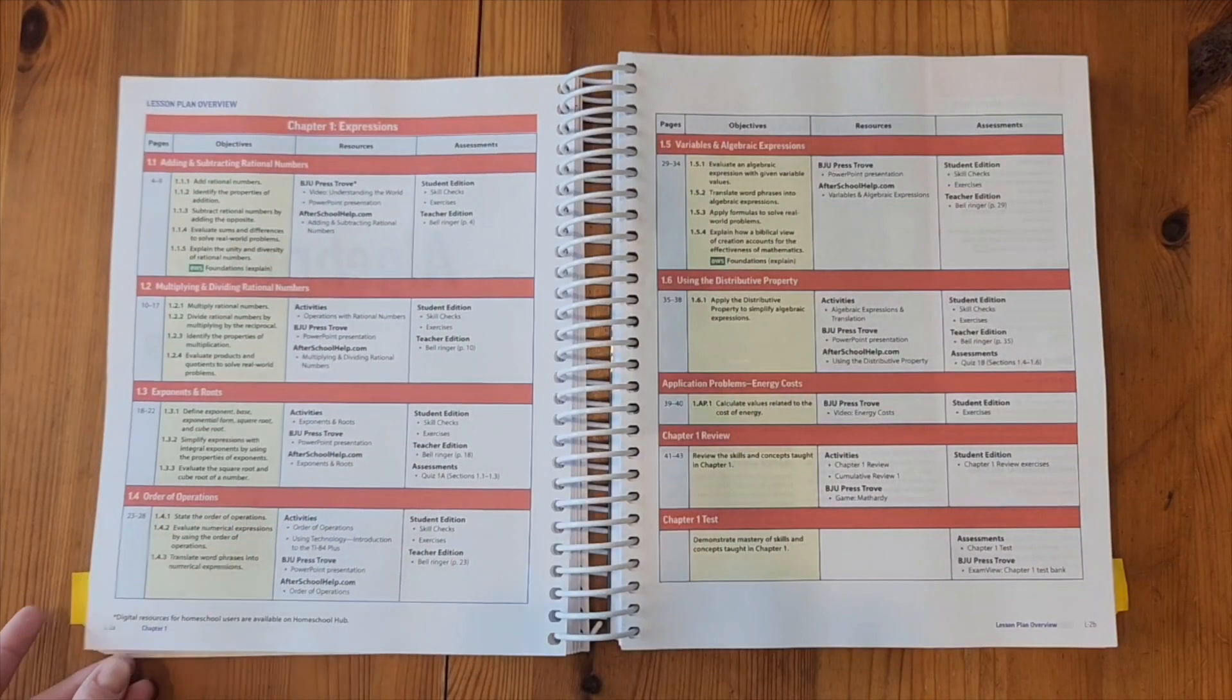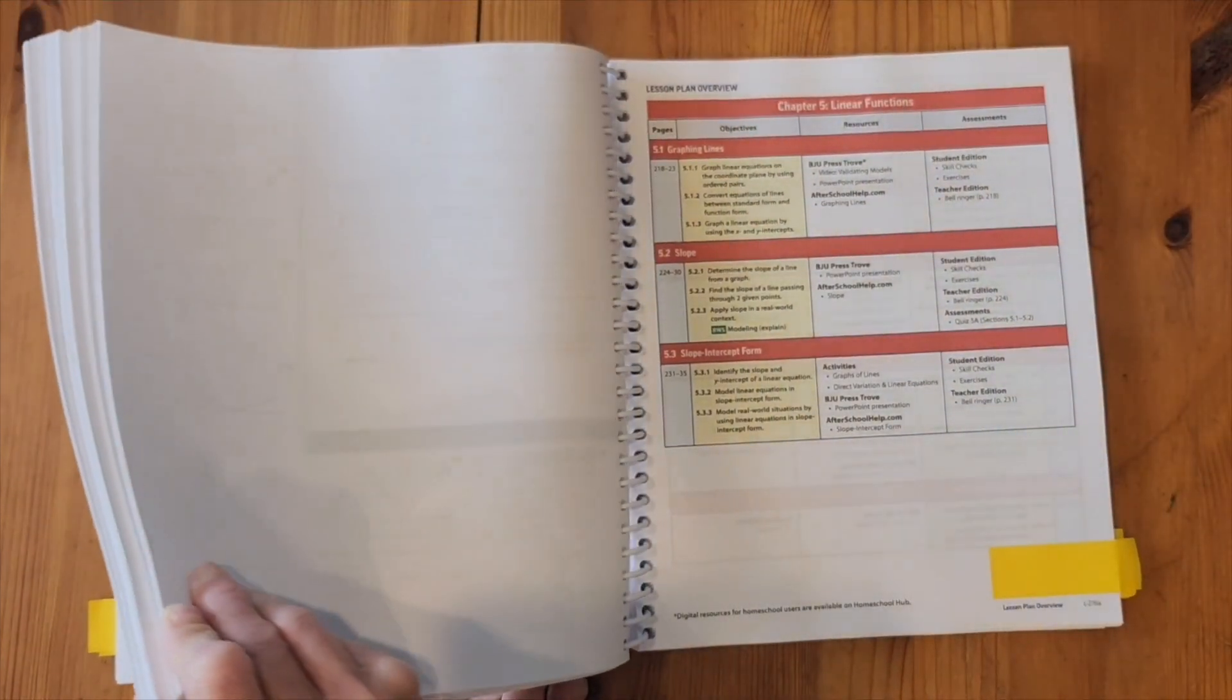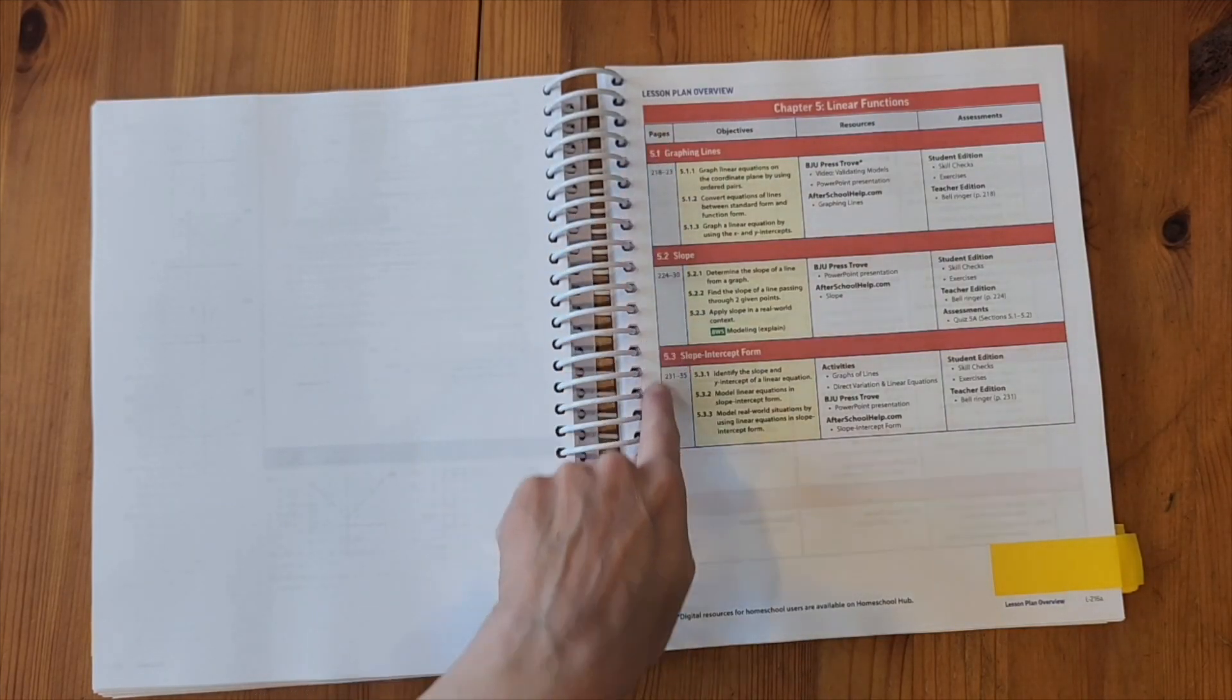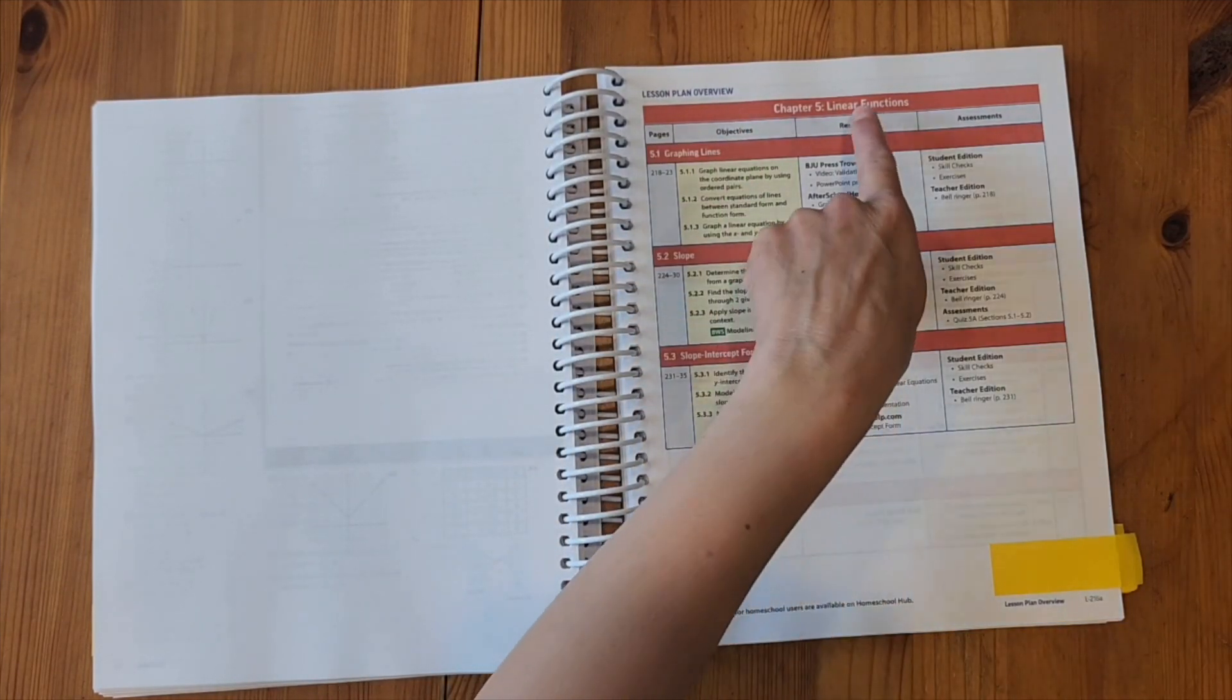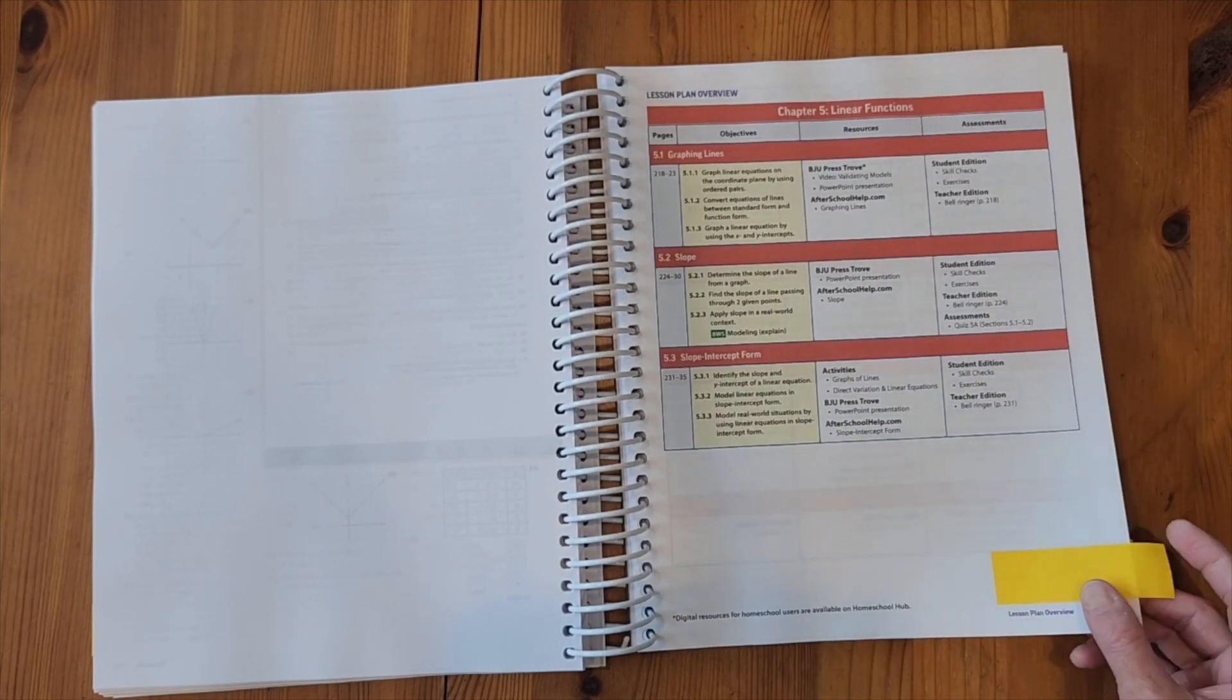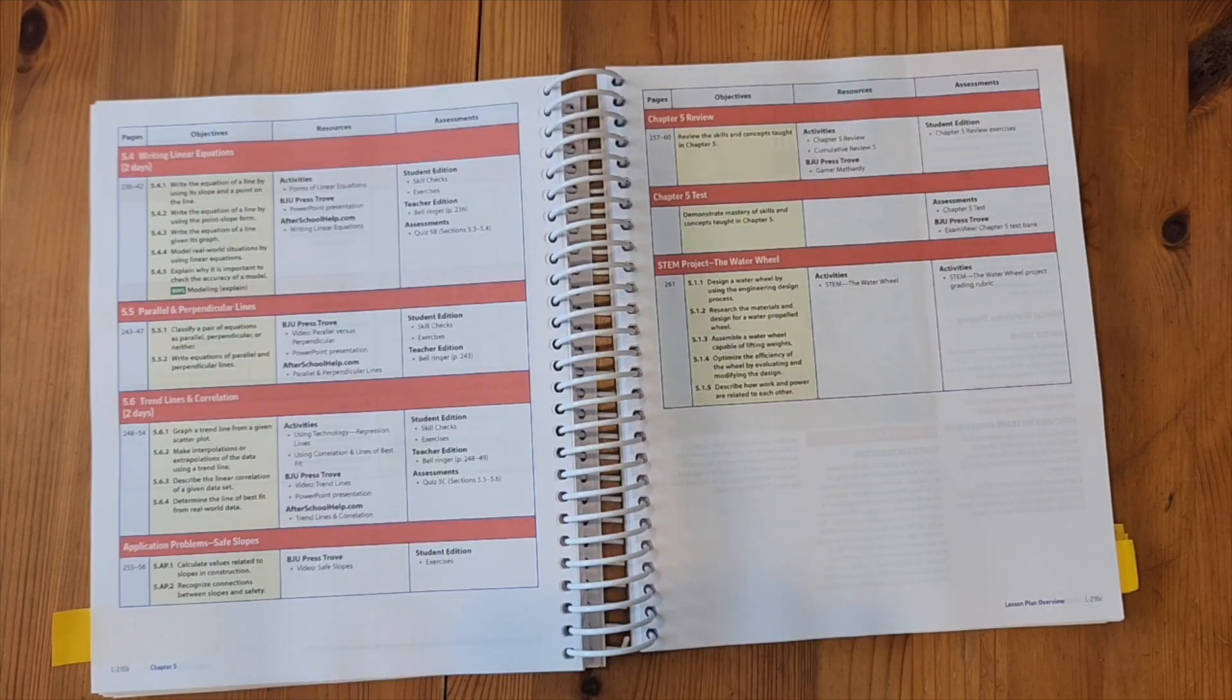And then we get to the lesson plan overview. We are actually going to jump ahead to chapter 5, which is a chapter on linear functions. So this is the lesson plan overview for chapter 5, and the way this is laid out is the first column is the page numbers, the second column in yellow is the objectives for each lesson, the middle column is the resources we would need for the lesson, and the last column is the assessments. Just as a reminder, homeschool families have access to many of the materials for the resources on the homeschool hub. BJU Press Trove is actually the classroom teacher website where they would go to find their extra resources.